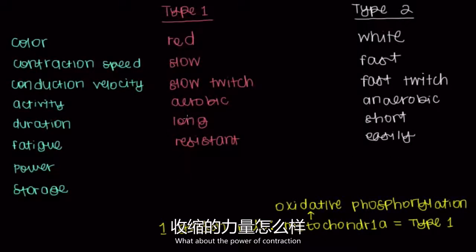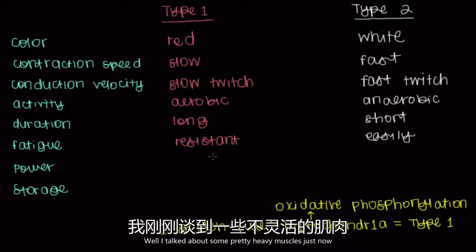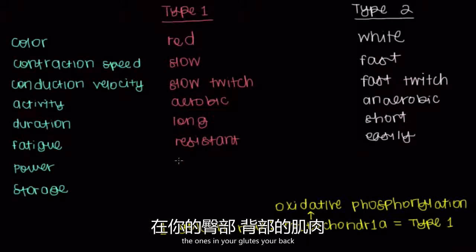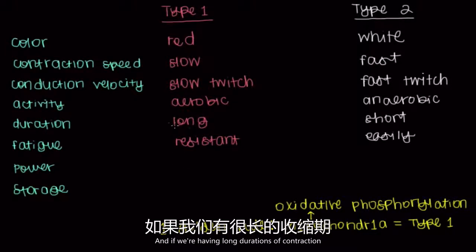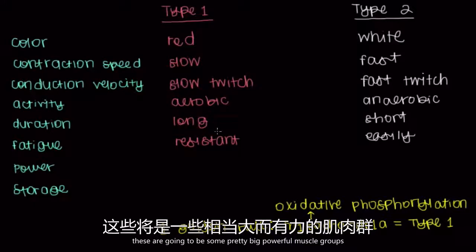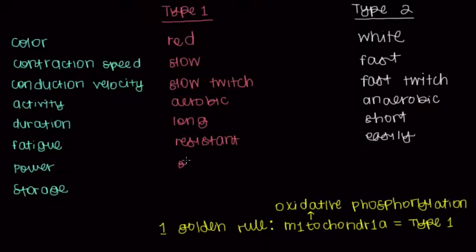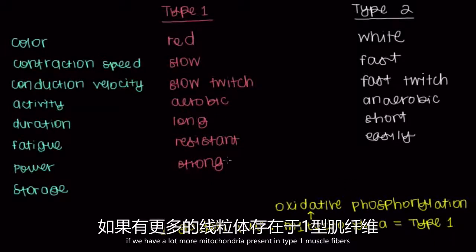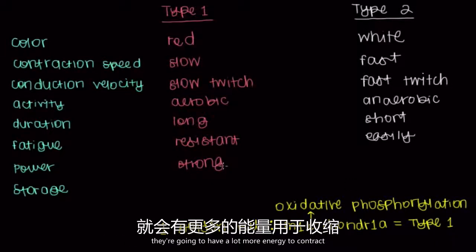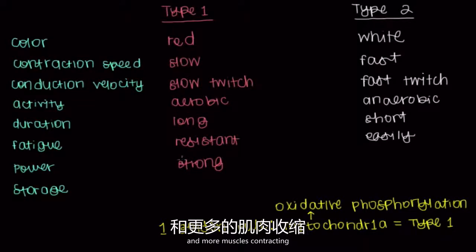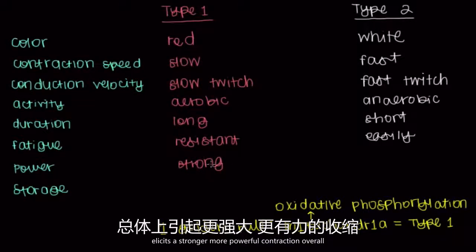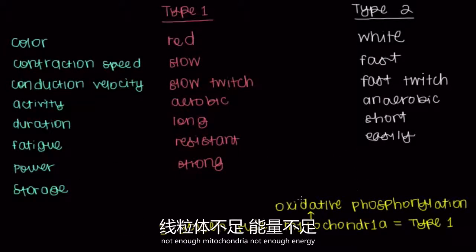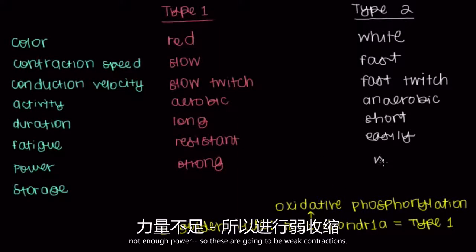What about the power of contraction for type 1 muscle fibers? The muscles in your glutes and back produce long duration contractions and are big, powerful muscle groups — so type 1 is strong. With more mitochondria and more energy, more muscle cells contract at the same time, eliciting a stronger, more powerful contraction overall. On the flip side, type 2 muscle fibers — not enough mitochondria, not enough energy, not enough power — produce weak contractions.